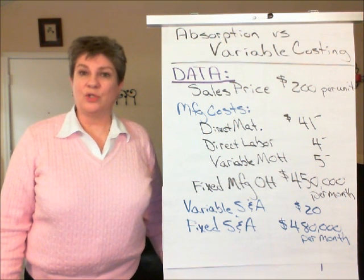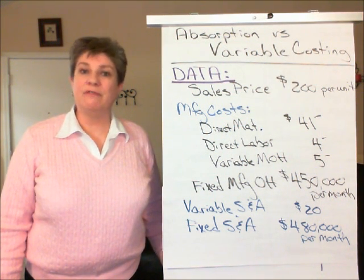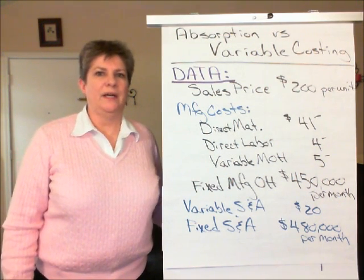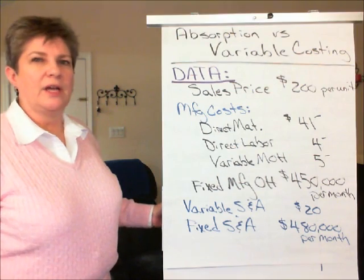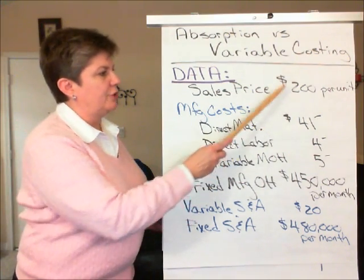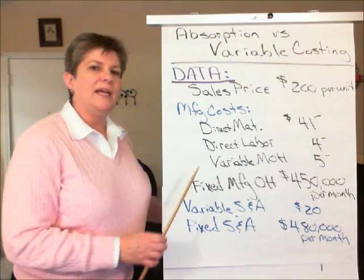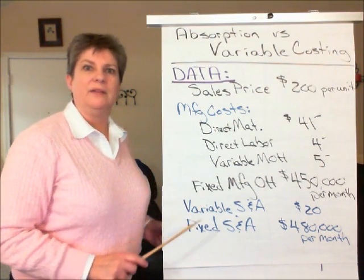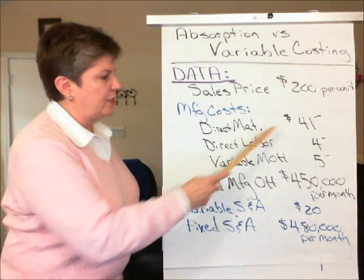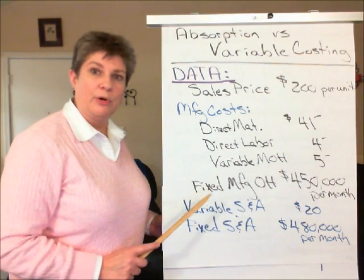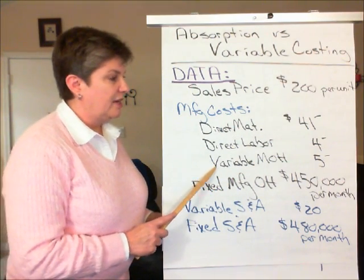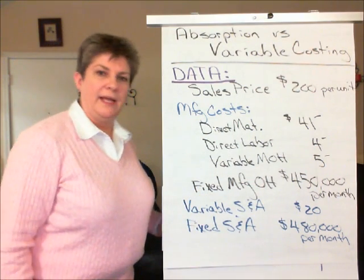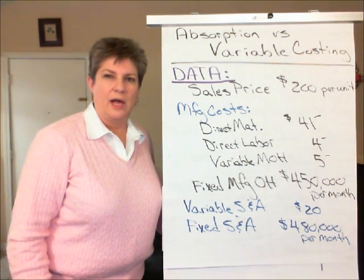Managerial accounting: absorption costing versus variable costing. Recall from our data video that our single product company sells its product for $200 per unit, and it incurs these manufacturing costs in making that product: direct materials of $41, direct labor of $4 per unit, variable overhead of $5 per unit, and fixed overhead of $450,000 per month.